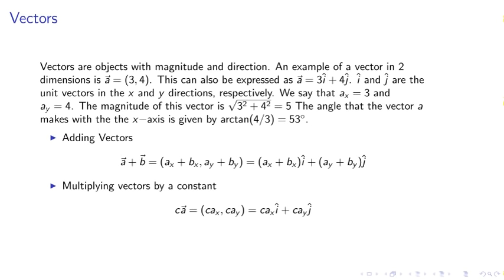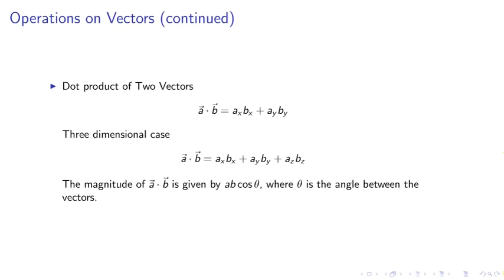Vectors. Vectors are objects with magnitude and direction. An example of a vector in two dimensions is A equals 3 comma 4. This can be expressed as A equals 3 i-hat plus 4 j-hat. I-hat and j-hat are the unit vectors in the x and y directions, respectively. We say that Ax equals 3 and Ay equals 4. The magnitude of this vector is 5. The angle that the vector A makes with the x-axis is given by arc tangent 4 over 3 equals 53 degrees.